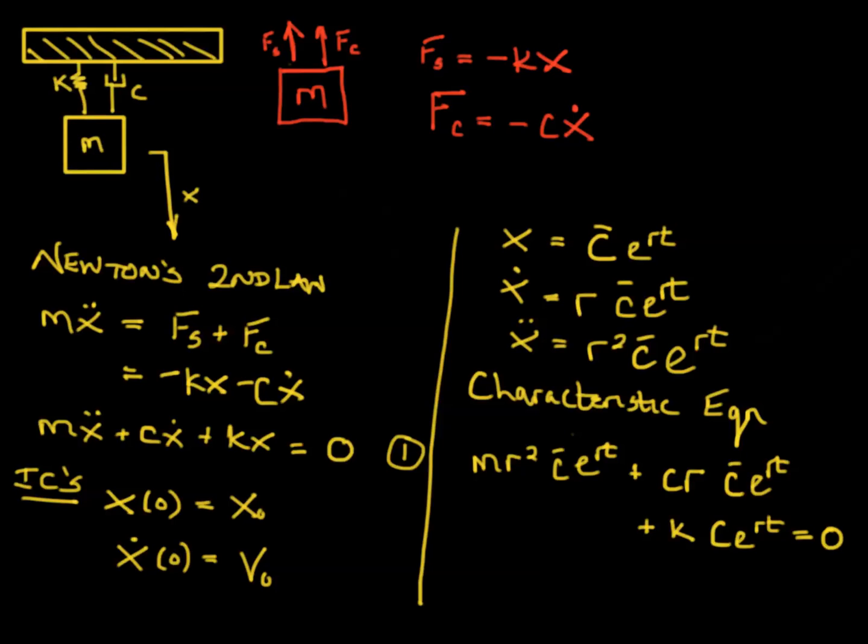Now for non-trivial solutions, C bar is non-zero, so that must cancel. E to the RT is never zero, so that must cancel. And you're left with a characteristic equation that says M R squared plus C R plus K equals zero.